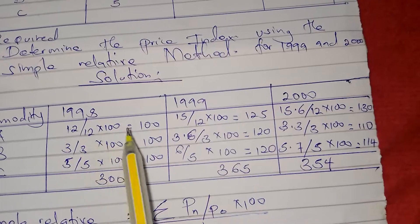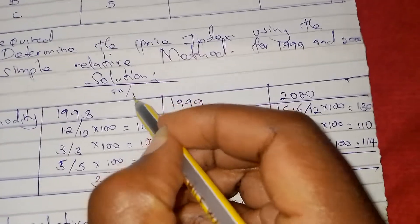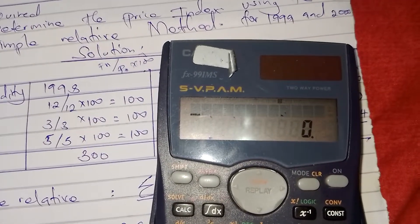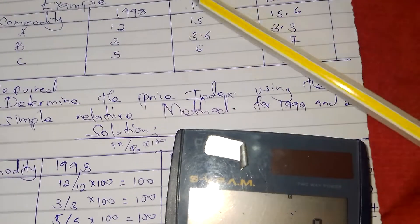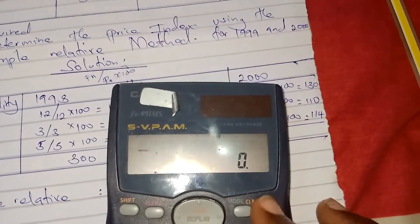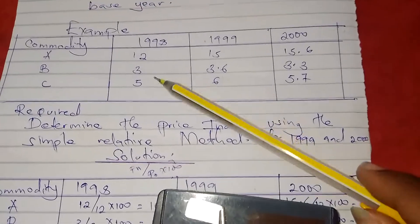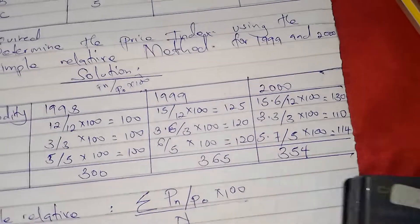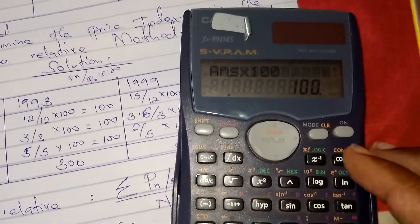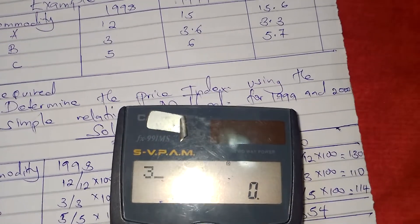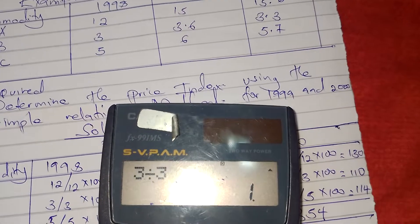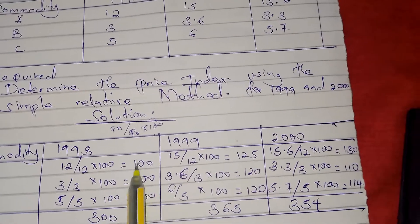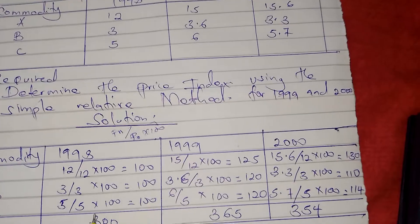For 1998, we calculate Pn / P0 times 100. Since 1998 is the base year, Pn and P0 are the same figure. For commodity A: 12/12 × 100 = 100. For commodity B: similarly = 100. For commodity C: 5/5 × 100 = 100. Adding these gives a summation of 300 for 1998.